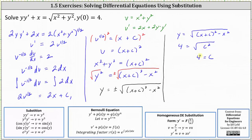Which means in our case the particular solution is y equals the positive or principal square root of the difference of x plus four squared and x squared.